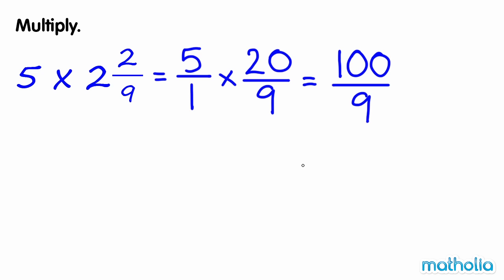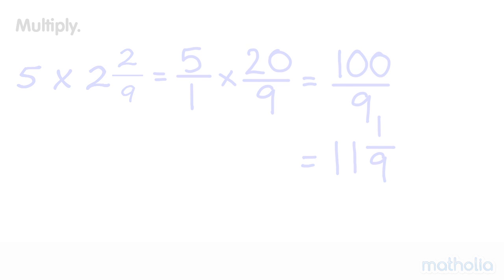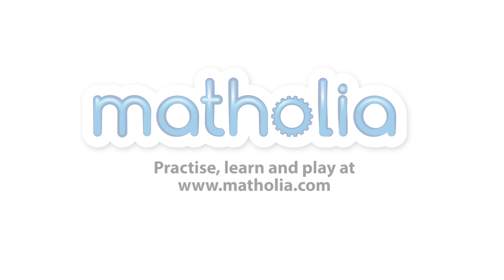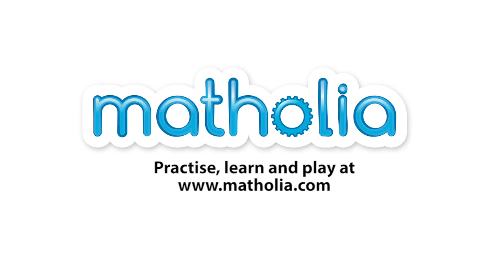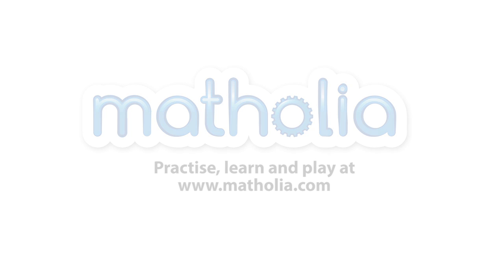One hundred-ninths can be expressed as the mixed number eleven and one-ninths. So five times two and two-ninths is equal to eleven and one-ninths.